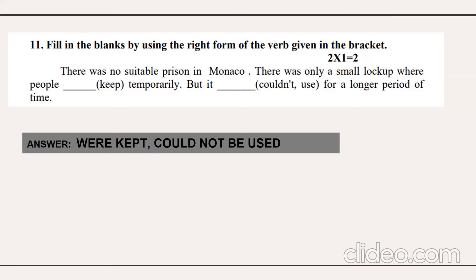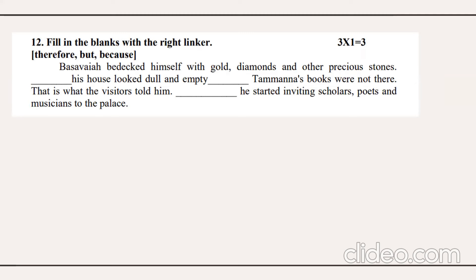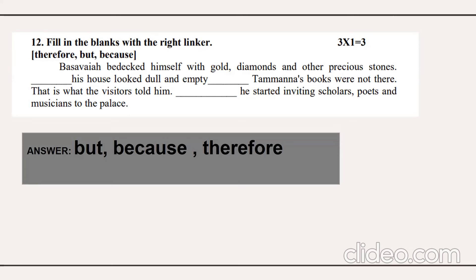Question number 12 involves linkers — therefore, but, because — for three marks. Baswaya bedecked himself with gold, diamonds, and other precious stones; blank — his house looked dull and empty because Tamanna's books were not there. That is what visitors told him. He started inviting scholars, poets, and musicians to the palace. You need to fix the appropriate linkers. Active/passive voice is two marks and linkers are three marks.